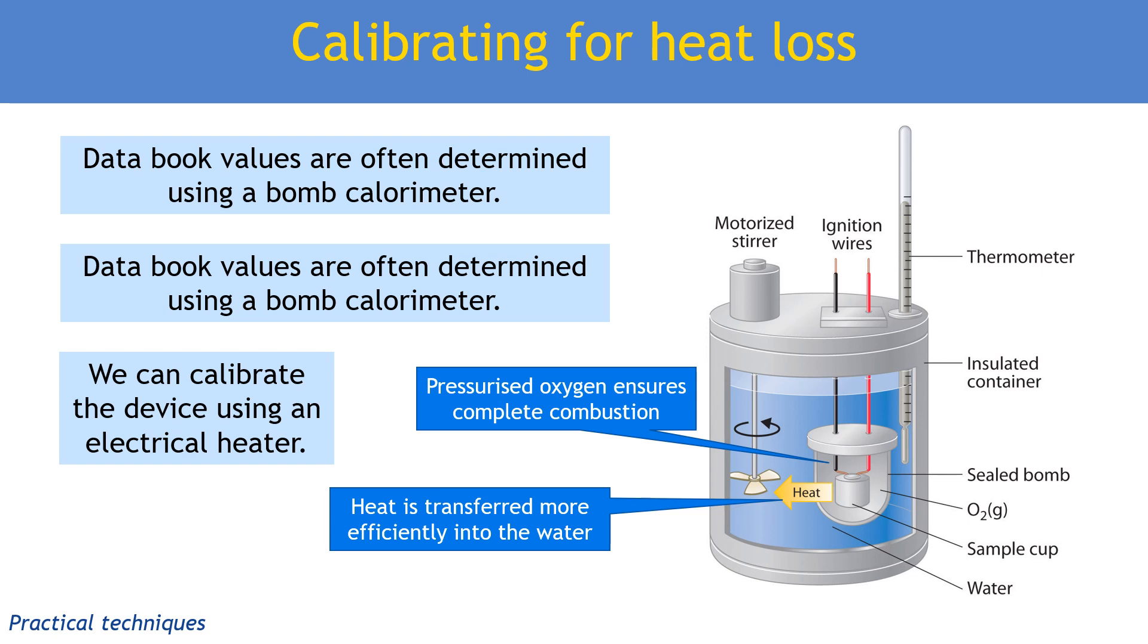We no longer assume this 4.18 value; we actually work out the joules per degree for this particular calorimeter. This is something we can do in our own experiment. If we have a fuel where we know the enthalpy of combustion, we can work out how much energy has actually been transferred to the water and how much of it is lost to the surroundings.